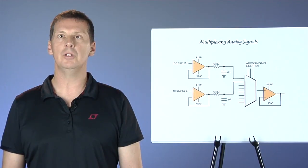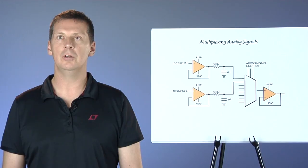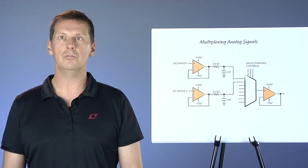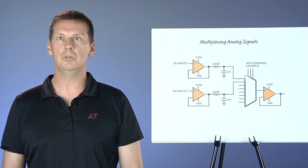Therefore, any circuitry after the multiplexer must be able to respond to these transitions. If the output signal does not fully settle to the target accuracy, then the measured value of a given channel can depend on the value of the previous channel, which is the same as channel-to-channel crosstalk.